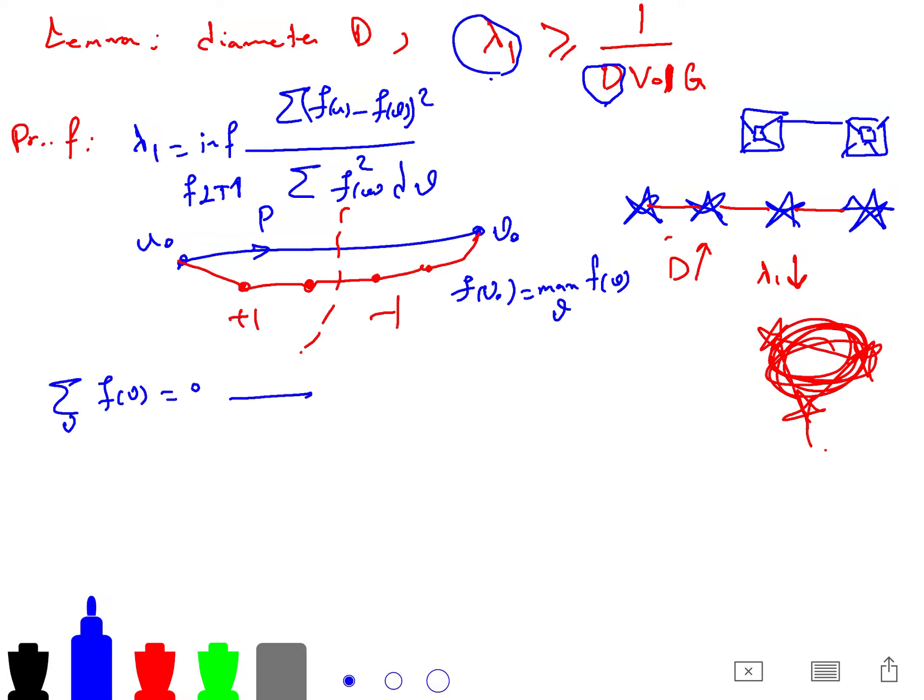there exists a vertex u0 such that f(u0)*f(v0) is less than 0. And so p is that shortest path in g that joins u0 and v0.